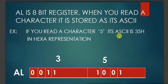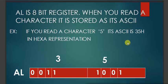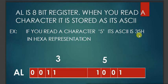So when you read '5' from your keyboard, it is stored as 35 in hexadecimal — 35 is the ASCII code for '5' in hex representation. In decimal representation the ASCII value would be different, but when reading from the keyboard our computer stores the value in its ASCII form in hexadecimal representation.